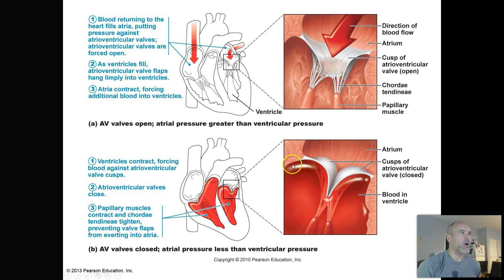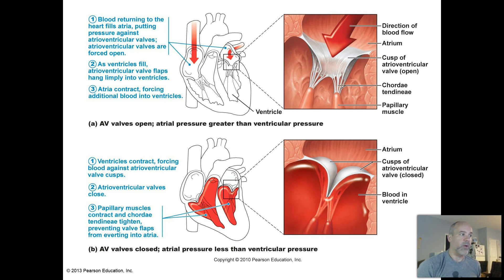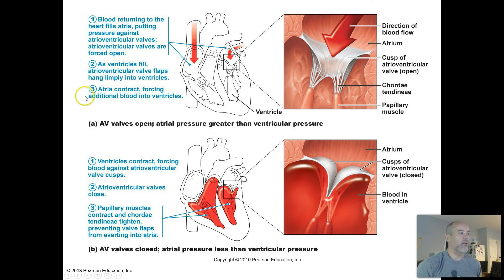Most of the rest of the PowerPoint has diagrams from your textbook, which you need to read through and review to understand this one-way flow of blood through the heart — from the atria to the ventricles to the big blood vessels, your pulmonary trunk and aorta. This diagram is walking you through what was just demonstrated on Visible Body.